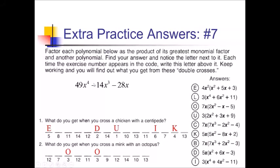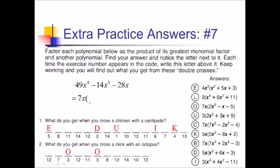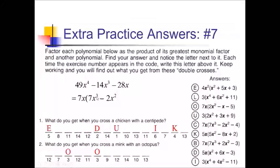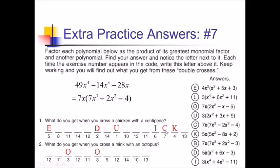For problem 7, we have 49, negative 14, and negative 28 — the common factor for numbers is 7, and the lowest x exponent is x to the first, so GCF is 7x. Dividing through: 49x to the fourth gives 7x cubed; negative 14x cubed gives negative 2x squared; negative 28x gives minus 4. That's choice C. Spot 7 gets a C, and there's another 7 in the second puzzle, so we put another C down there as well.